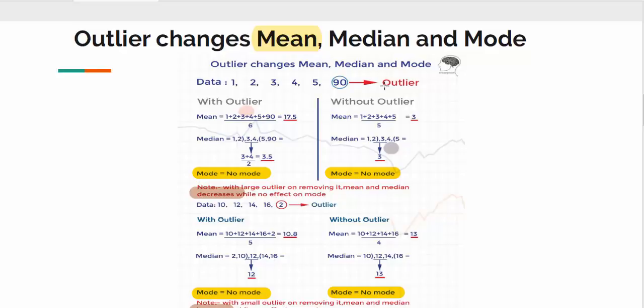Now we could see that outlier is a large number. So we calculated the mean, median, and mode with outlier, and we also calculated mean, median, and mode without outlier. We could see that with large outlier, on removing it, mean and median decreased, but it has no impact on the mode.